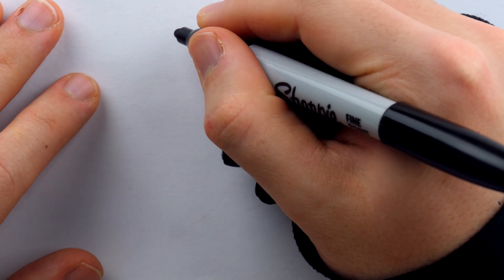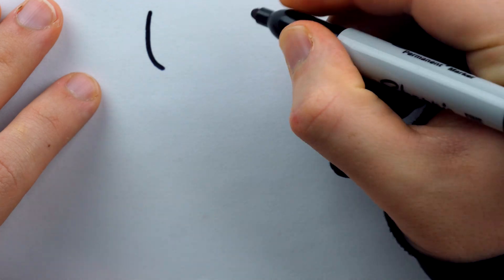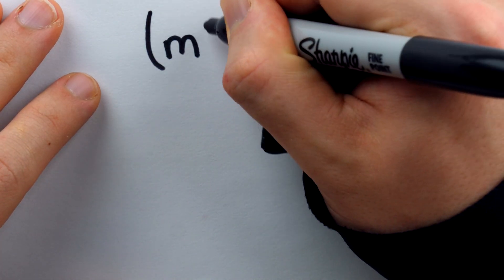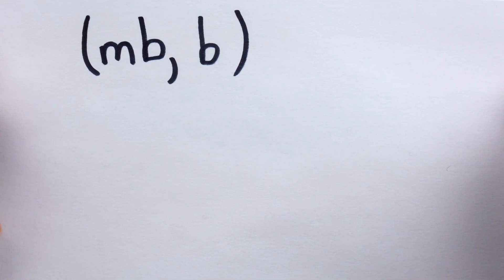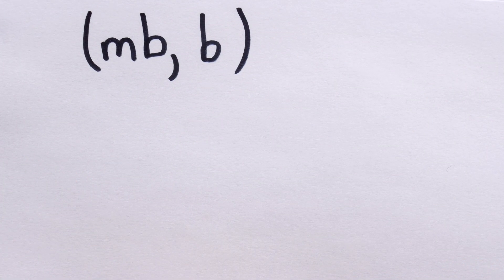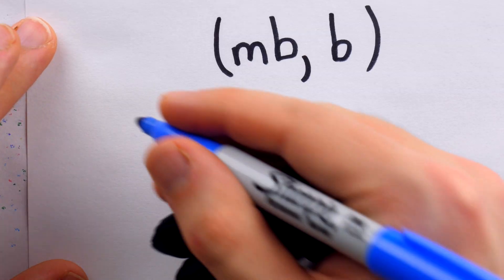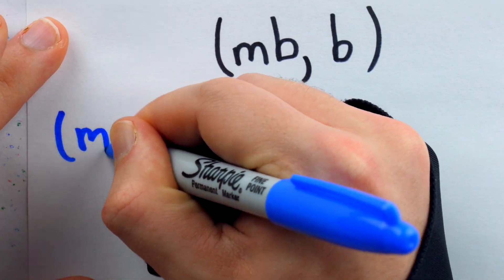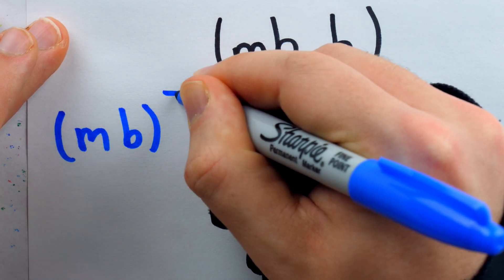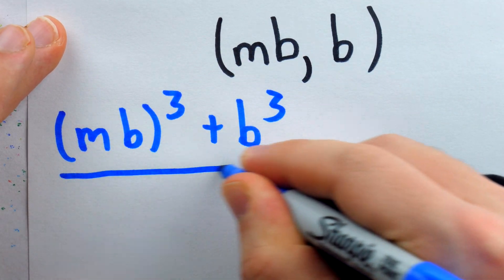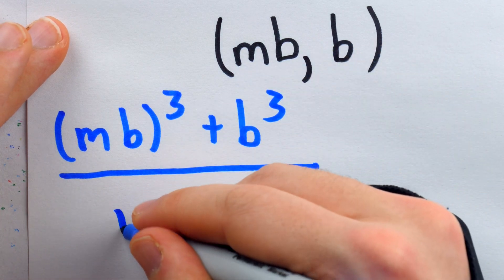So then let's try this more general integer ordered pair. We'll have b and a is going to be some arbitrary multiple of b, say mb, and we'll plug this into our expression and see what we get and what we can conclude. So plugging this into our expression in the numerator, we have (mb)³ + b³, and this is divided by mb - b.